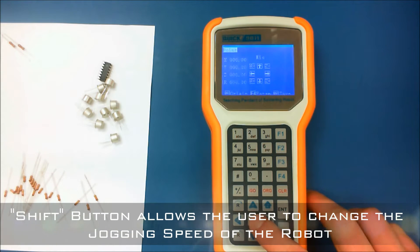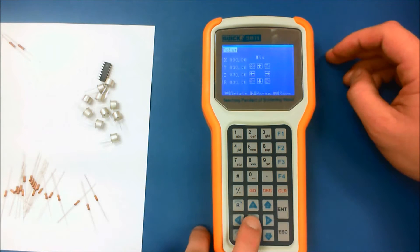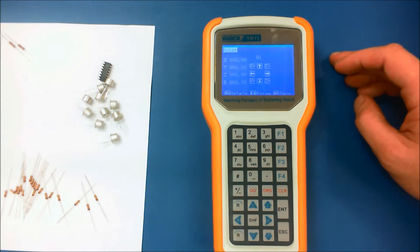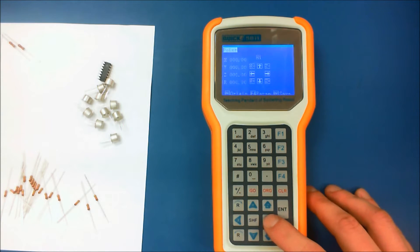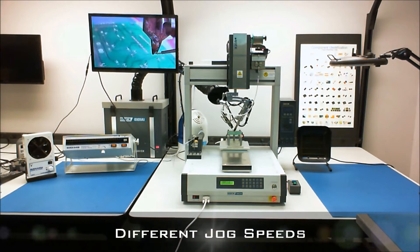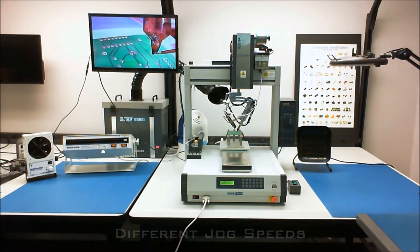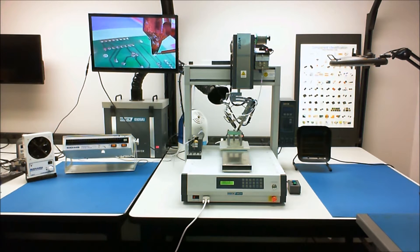Now using the shift button will actually allow you to change the jogging speed of the robot. You can see that designated just above the up arrow on the LCD display. I'm going to show you a few examples of different run modes here. Fast movement, medium movement, and slow movement.